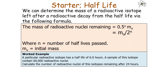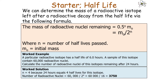A particular radioactive isotope has a half-life of 6 hours, and a sample contains 60,000 radioactive nuclei. Calculate the number of radioactive nuclei remaining after 24 hours. First, work out the number of half-lives: 24 ÷ 6 = 4, so n = 4. Then: 60,000 ÷ 2⁴ = 60,000 ÷ 16 = 3,750. After 4 half-lives, 3,750 radioactive nuclei remain.